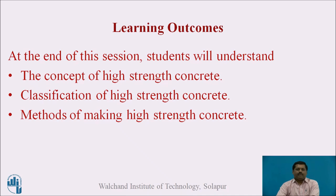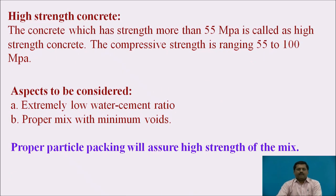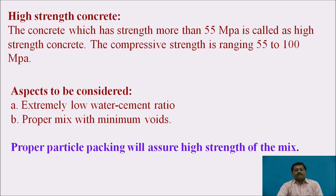Concrete having compressive strength more than 55 N/mm² is known as high-strength concrete. If the compressive strength is less than 55 MPa, it is termed as normal or standard grade concrete. If the compressive strength is in the range of 55 to 100 MPa, that concrete is called high-strength concrete.